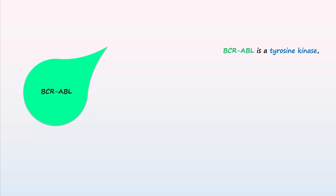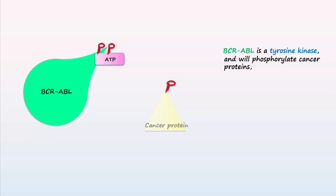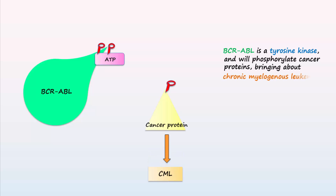The BCR-ABL protein is a tyrosine kinase, meaning it has the ability to transfer a phosphate group from ATP to another structure — a process known as phosphorylation. In this case, BCR-ABL transfers a phosphate group to a cancer protein, causing it to become activated. This leads to uncontrolled myeloid growth and brings about chronic myelogenous leukemia.